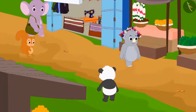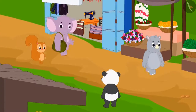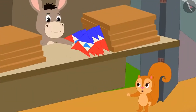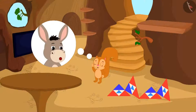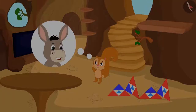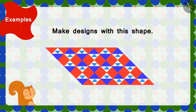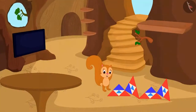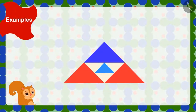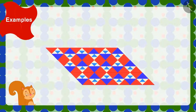Next day, Chanda bought these types of tiles from the market. The shopkeeper had told Chanda that she could use tiles with such shape and make this type of design. But Chanda is unable to make this design. Children, can you help Chanda make the design by making use of the tiles with this shape?